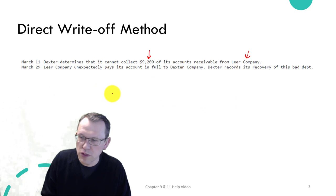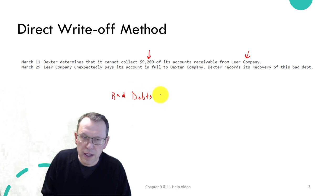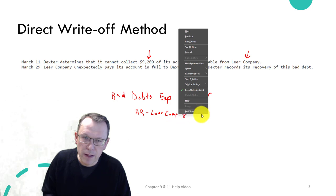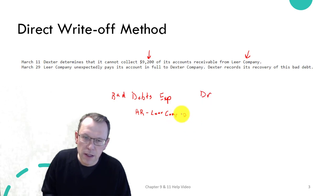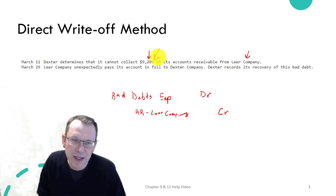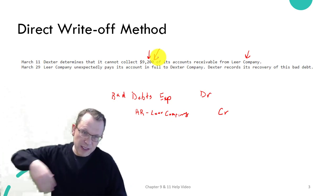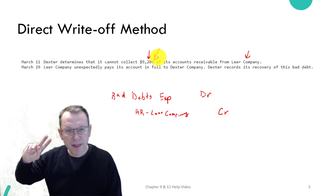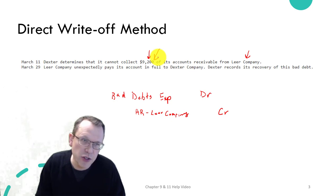We're going to expense this using an account called Bad Debt Expense. That will be our debit. Our credit will be Accounts Receivable for Lear Company, for the amount we're writing off. Both debit and credit are for the same amount — in my example it's $9,200. We're basically saying we counted it as revenue, now we're expensing it, and those two cancel out. We've also reduced accounts receivable since we're not going to collect.